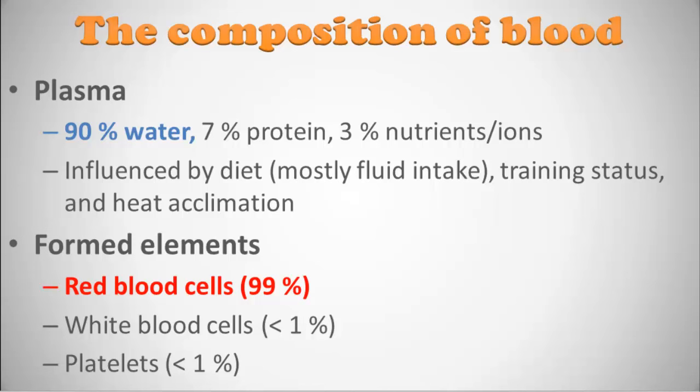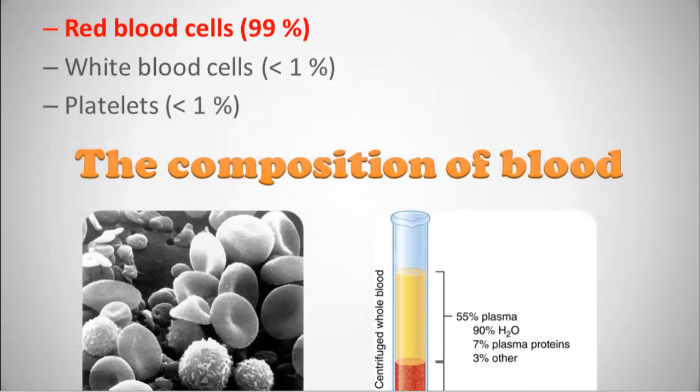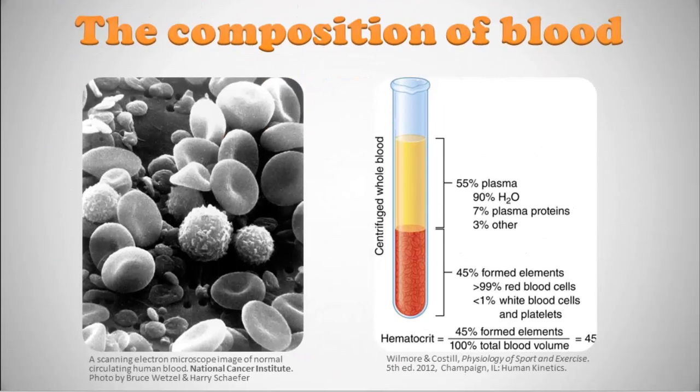The biggest amount of formed elements in your blood is going to be red blood cells. Formed elements are chock full of red blood cells — that's 99% of the formed elements in your blood. You're also going to have white blood cells and platelets, but by and large it's red blood cells that take up most of the space in formed elements.